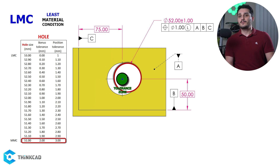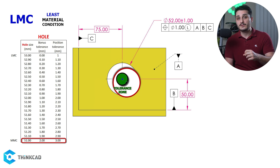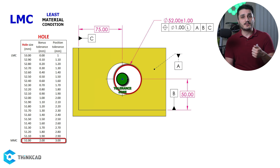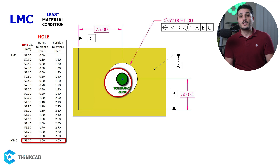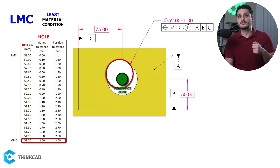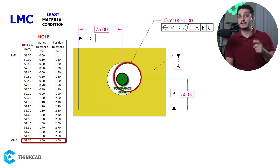LMC modifier is almost always used with internal features, meaning our hole example. It doesn't provide much benefit when dealing with external features. Just know that LMC modifier is mostly used to control minimum wall thickness when we have internal features.